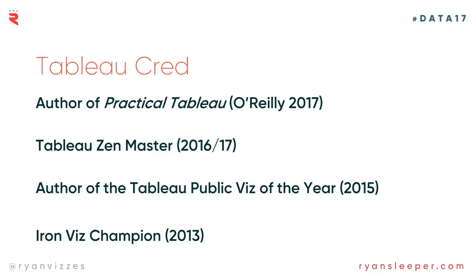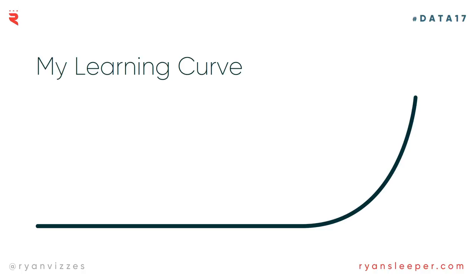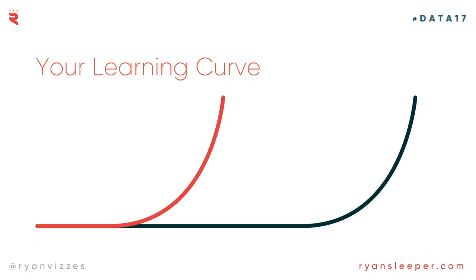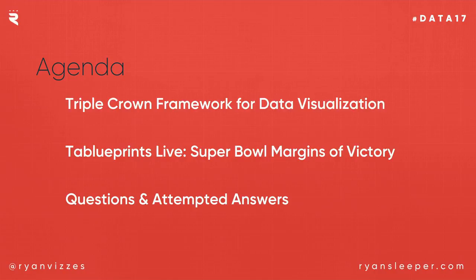Kyle mentioned I'm the only person in the world to have all three: Tableau Zen Master, Tableau Public Viz of the Year, and Iron Viz Champion. The reason I like to share those credentials is that it leads into my two favorite slides. Regardless of all those credentials, my learning curve looks something like this — that long, flat line represents about two years of really struggling with Tableau. It took me a long time to get it. My objective is that by attending conferences like this, attending training, seeing sessions like this, your learning curve is a lot faster than mine was.